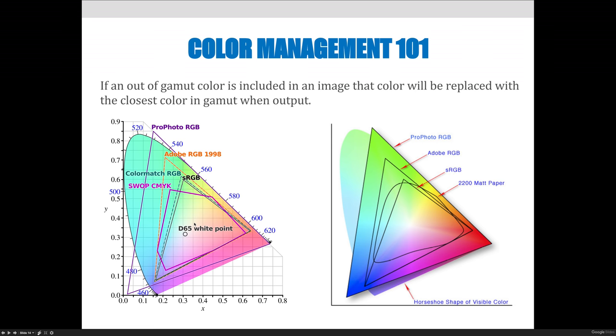Keep that in mind, keep this picture in your head. Even though I could in Adobe RGB create this bright green color up here, if I go to print it I have to understand that it's going to replace whatever color is out of gamut, which is outside of this pink CMYK bubble, and it's going to replace it with whatever color is the closest inside there.